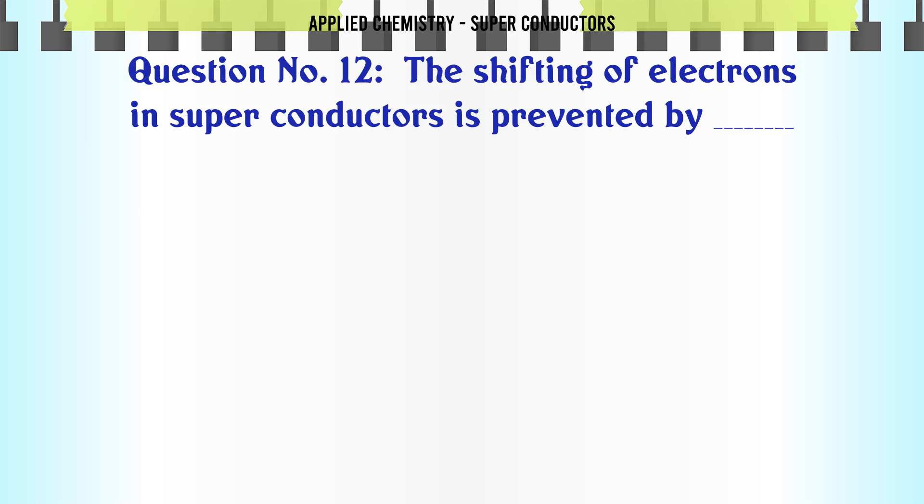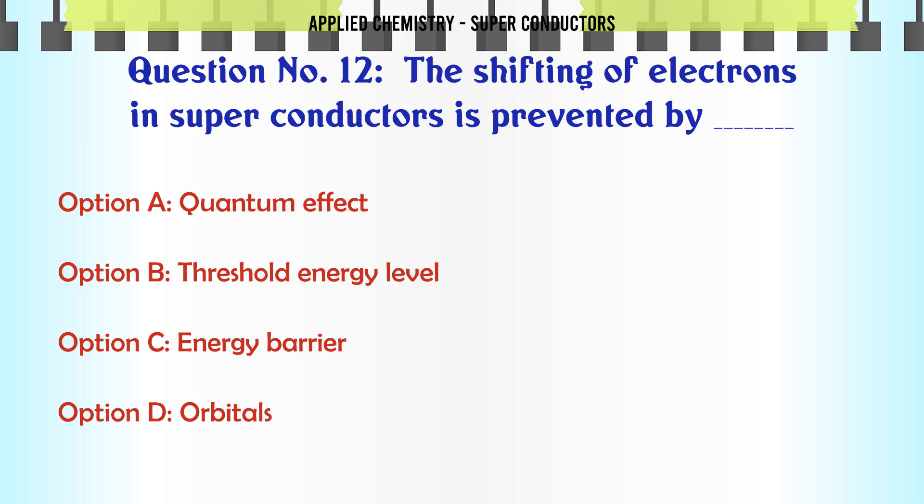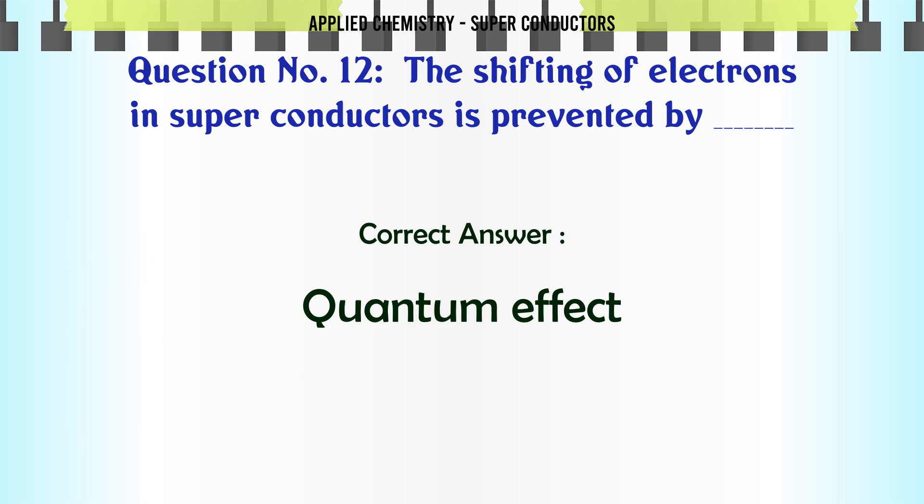The shifting of electrons in superconductors is prevented by: A quantum effect, B threshold energy level, C energy barrier, D orbitals. The correct answer is quantum effect.